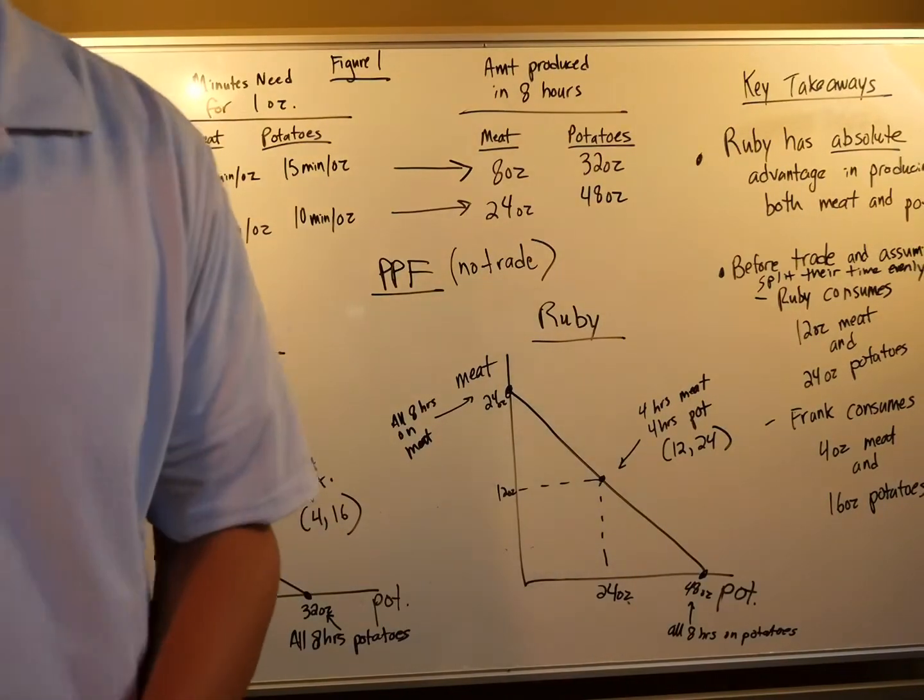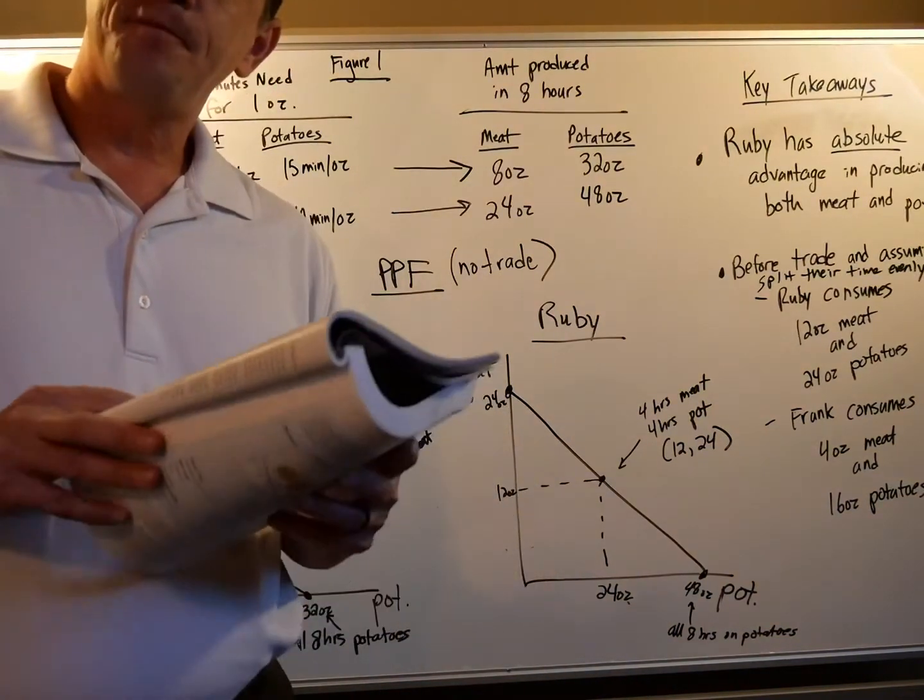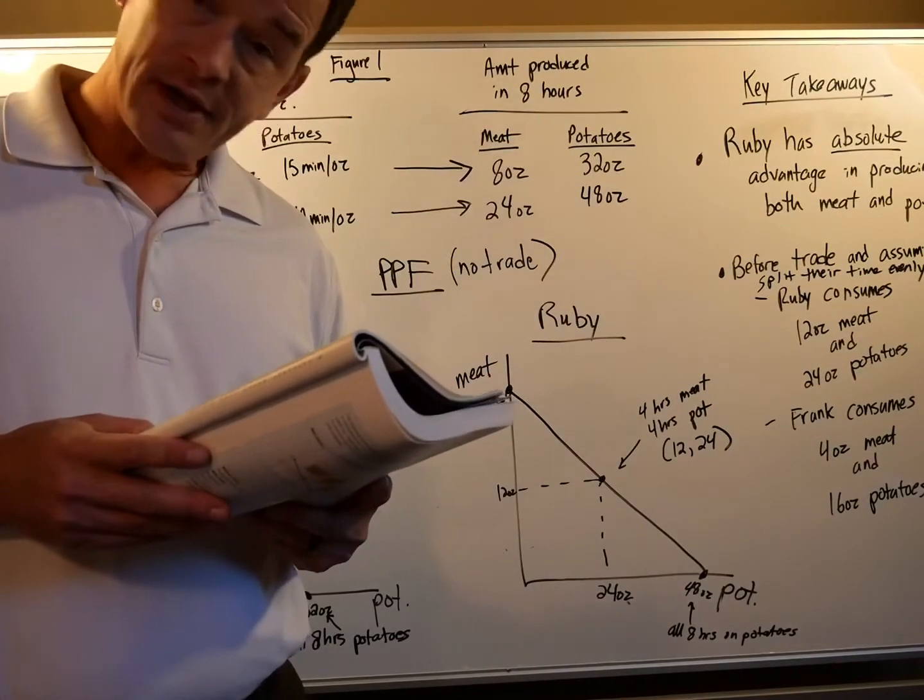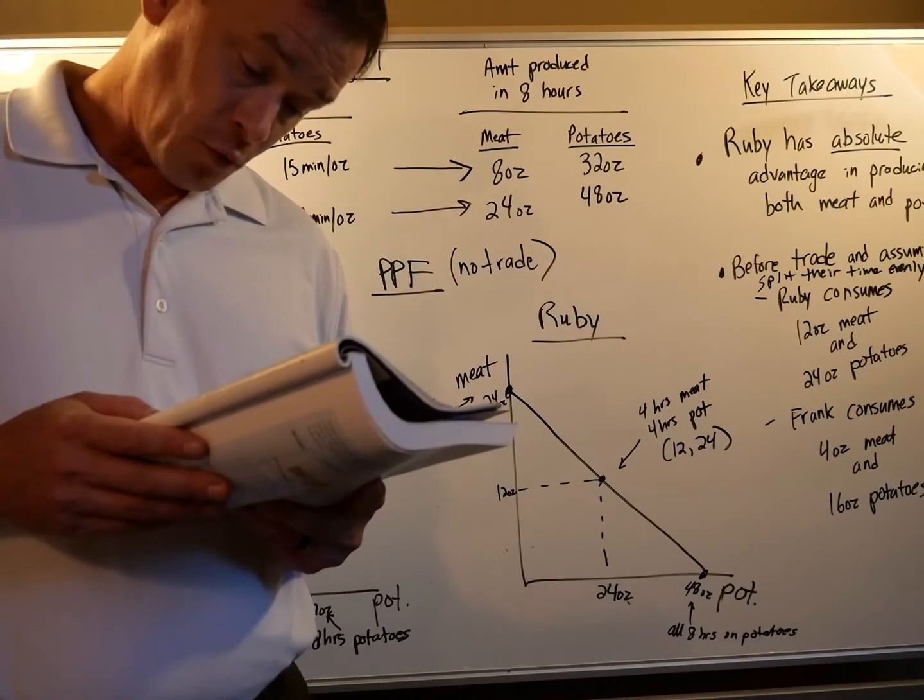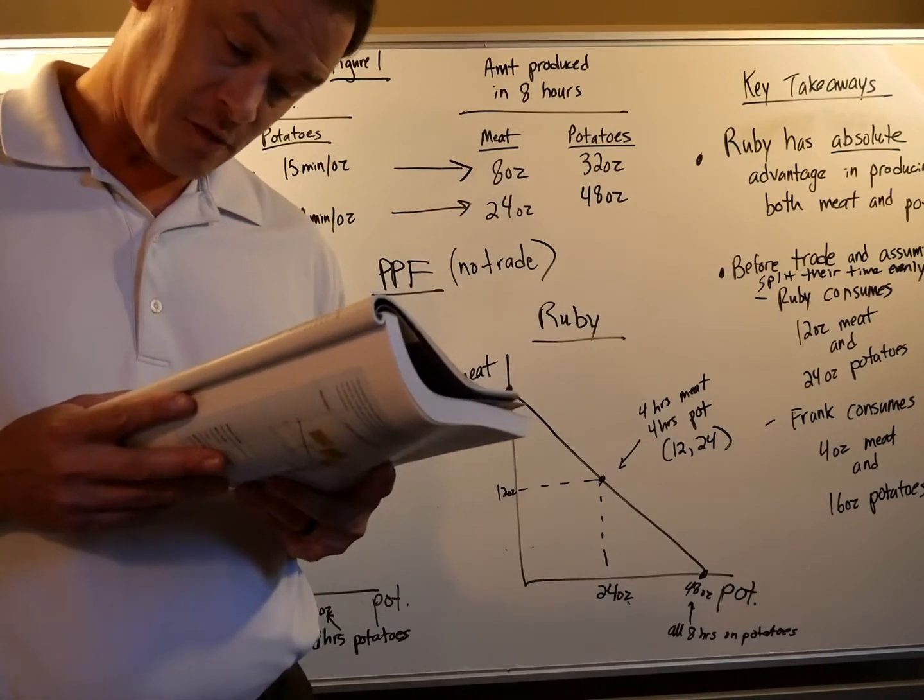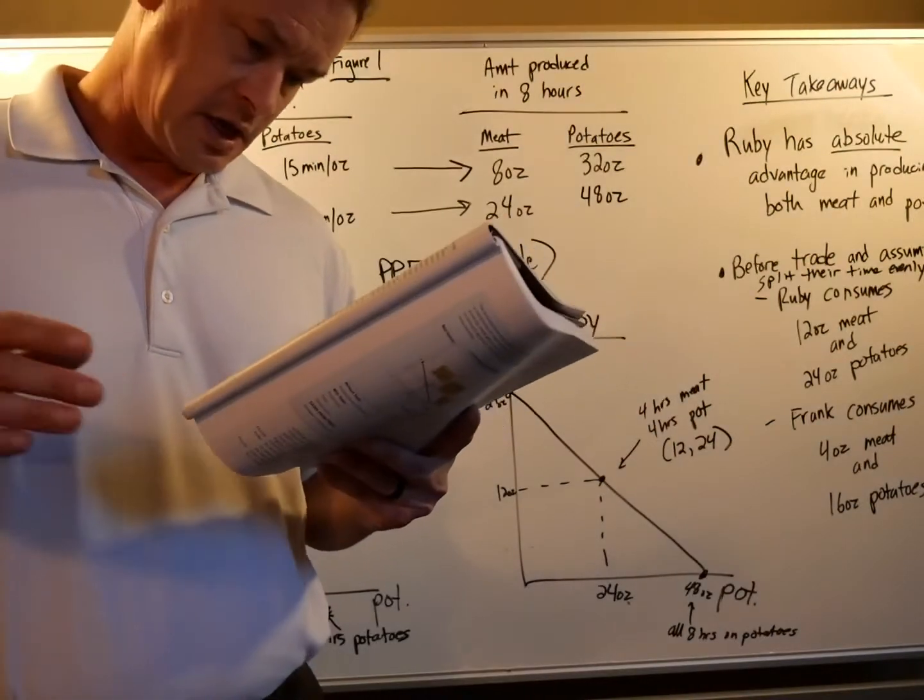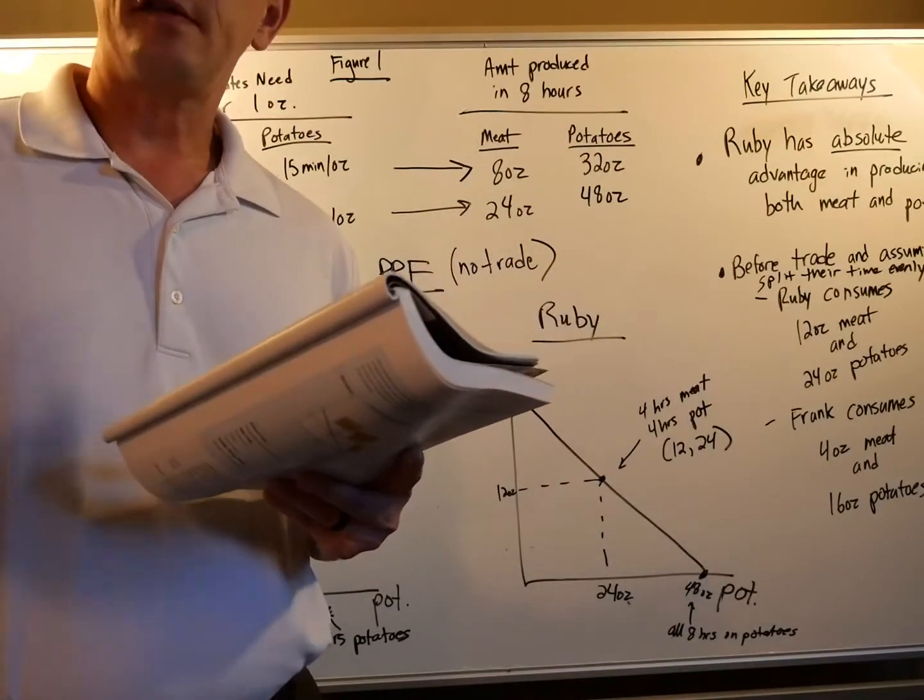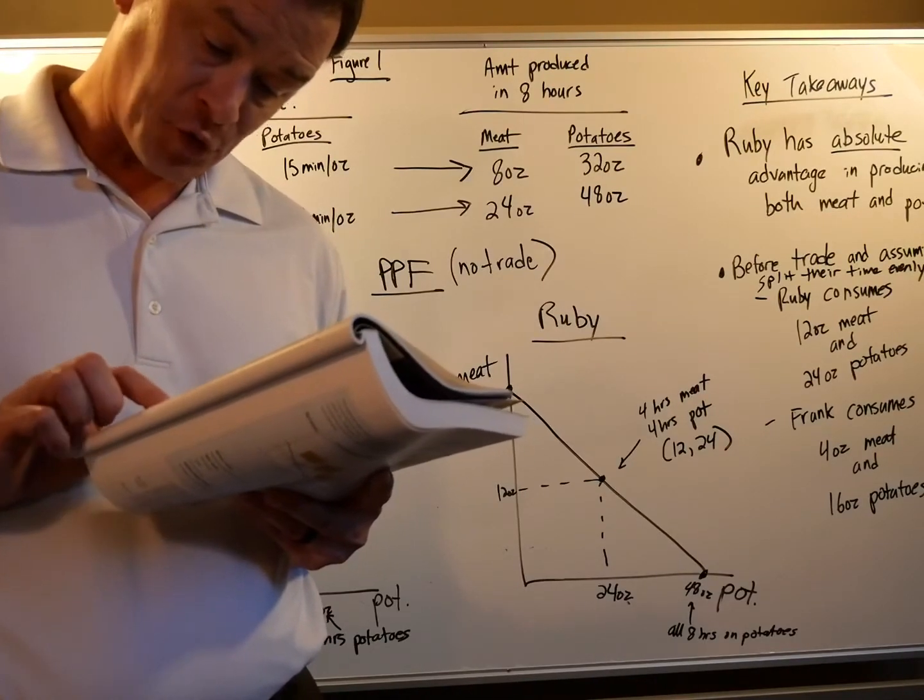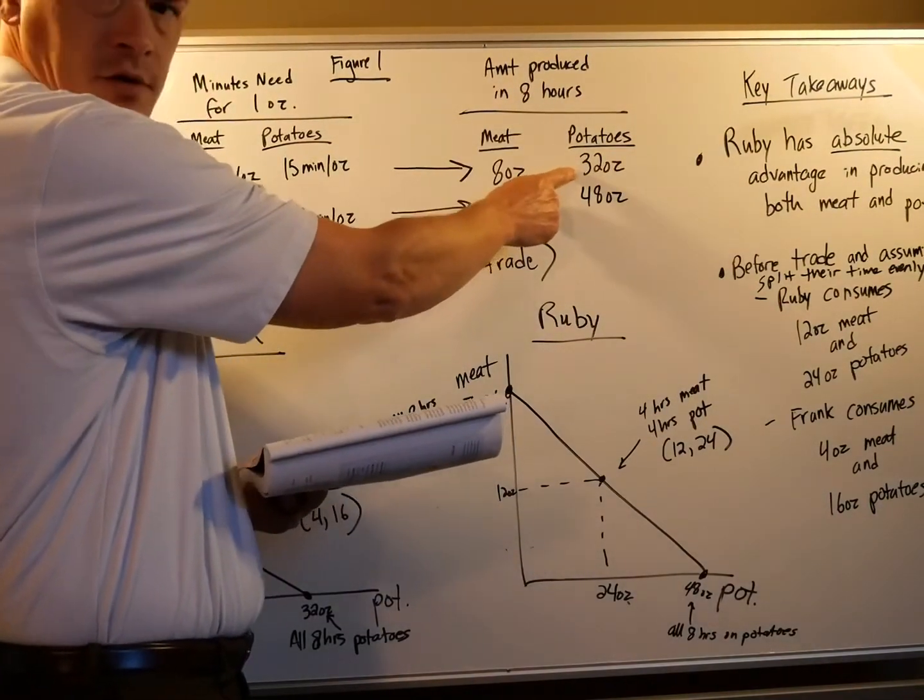Ruby says, you know what? If we trade together, we could be better off. Ruby starts out the conversation with, Frank, my friend, have I got a deal for you? I know how to improve life for both of us. I think you should stop producing meat altogether. Frank's like, what? I love meat. And devote all your time to growing potatoes. She's asking him to specialize. According to my calculations, if you work eight hours a day growing potatoes, you'll produce 32 ounces of potatoes. True story. If you do all eight hours on potatoes, Frank would make 32 ounces of potatoes.